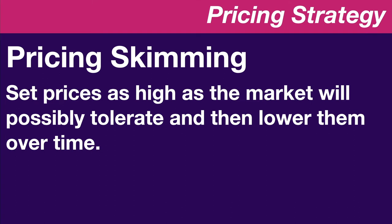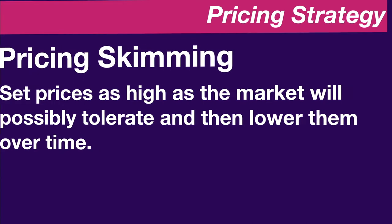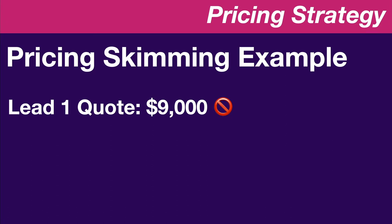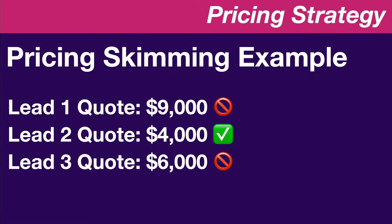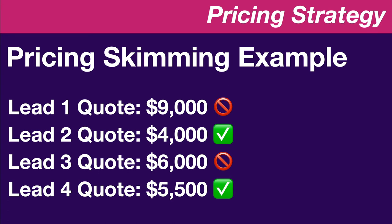Price skimming can happen on the high end, especially with a new service. You set the price as high as the market will tolerate and lower it over time. For example: I quote $9,000 on lead one and they don't bite; lead two I try $4,000 and they do; lead three I try $6,000 and they don't. Over time, you find out what the market will pay.